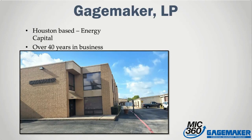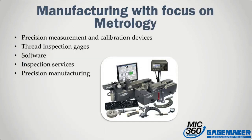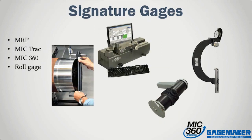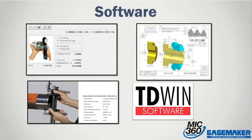GageMaker is a Houston-based manufacturer of precision inspection equipment and measuring devices for the quality control industry. GageMaker is recognized as a leader in the fields of gauge calibration, thread measurement, proprietary thread inspection, and large diameter measurement. With innovative products and software like the MRP Gage, MicTrack, Certify, TD-Win, and Mic360, we are dedicated to solving the problems of our customers and offering solutions that benefit multiple industries.